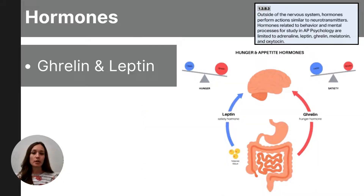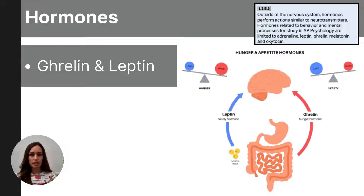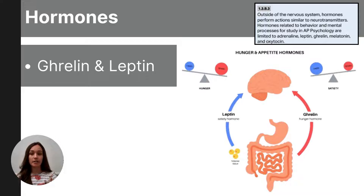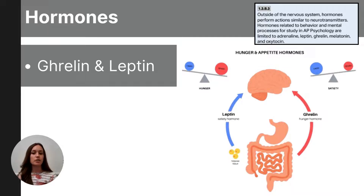Ghrelin and leptin are hormones related to hunger and appetite. Ghrelin is known as the hunger hormone because it stimulates our appetite and promotes food intake. It is primarily produced in the stomach and released into the bloodstream; ghrelin levels rise before meals, making us hungry, and decrease after eating. Leptin is an appetite suppressant — when we have enough energy stored in fat cells, leptin signals to the body that we have enough, and high levels of leptin decrease appetite and increase energy expenditure.